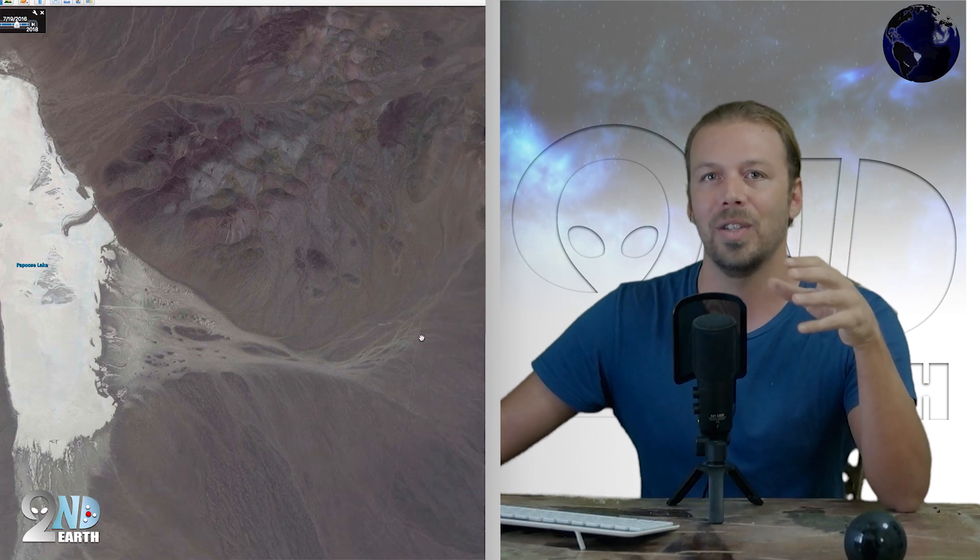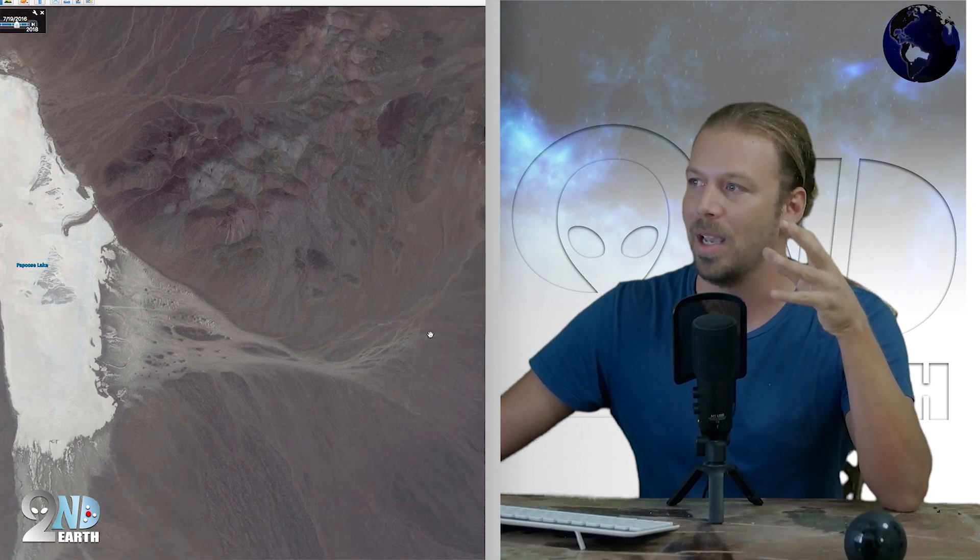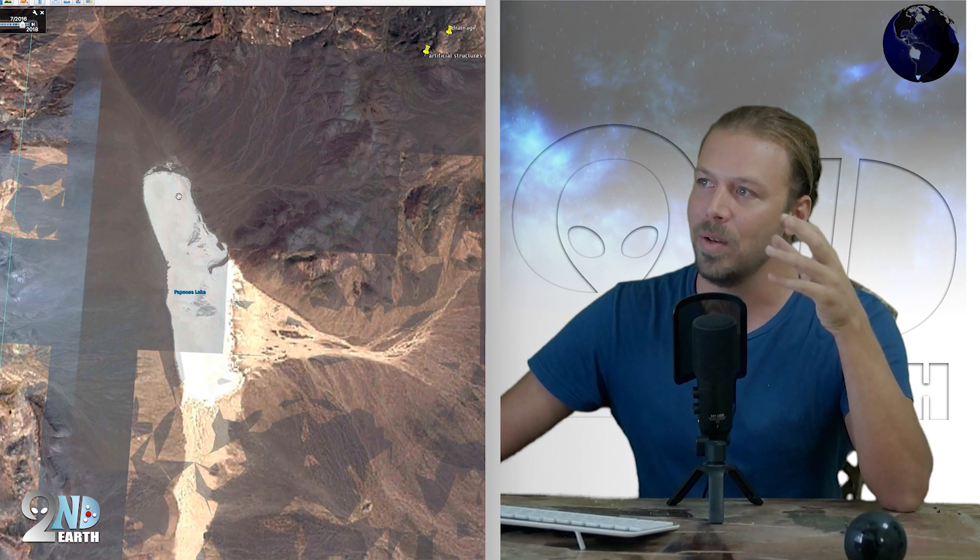Meaning wherever the entrance of S4 is, it's very likely that it's near some kind of tire tracks. Going with this logic, something that really struck me was this concept that you can either take the west road to Papoose Lake, or as you can see over here, you can take the east road to Papoose Lake.